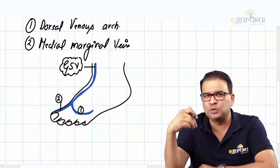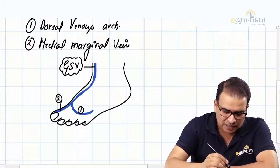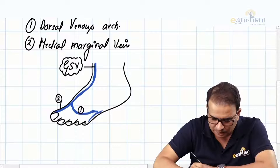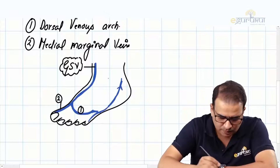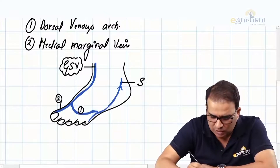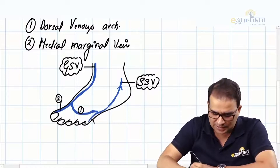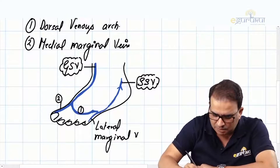In the popliteal fossa you also saw the small saphenous vein, which was piercing the roof of the popliteal fossa. If the question is asked how the small saphenous vein is formed, that's simple: the small saphenous vein is formed by the lateral marginal vein along with the dorsal venous arch. So small saphenous vein (SSV) = dorsal venous arch plus the lateral marginal vein.